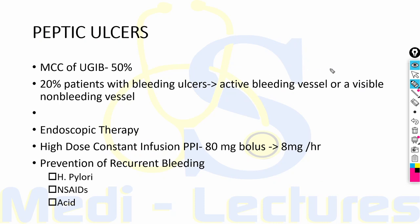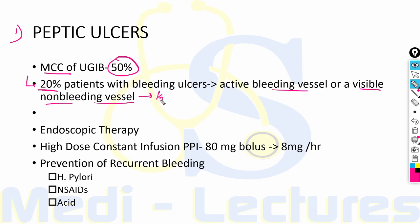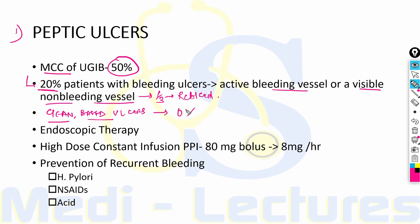The first and most common source of upper GI bleed is peptic ulcers, accounting for 50% of all upper GI bleeding hospitalizations. Of admitted patients, 20% have an active bleeding vessel or a visible non-bleeding vessel on upper GI endoscopy, of which one third can re-bleed requiring urgent surgery. In contrast, patients with clean-based ulcers on endoscopy have a re-bleeding risk of almost zero percent and do not require endoscopic intervention — only oral proton pump inhibitors.